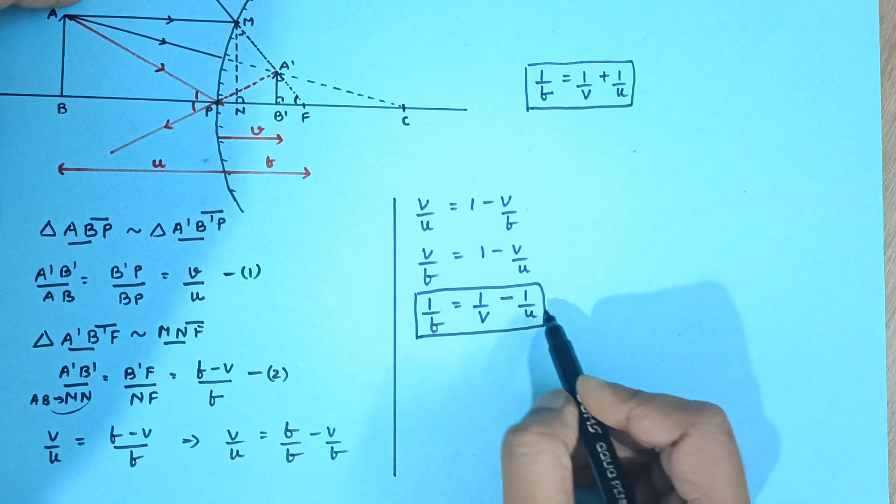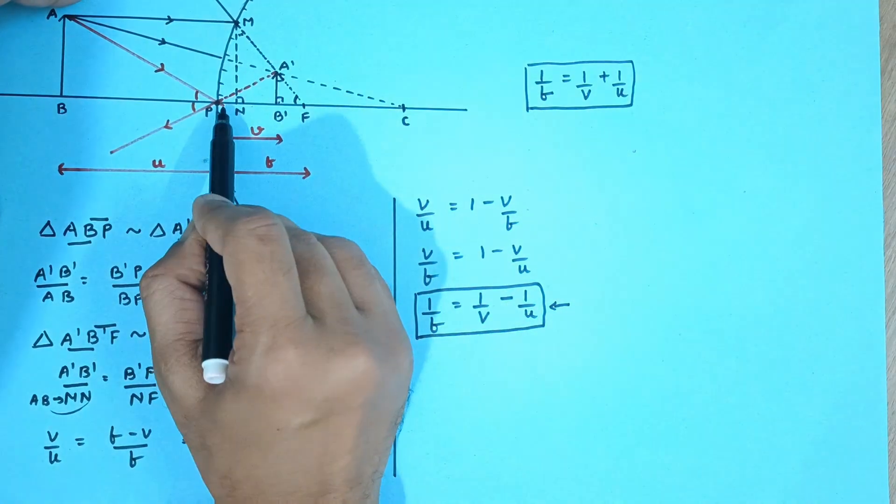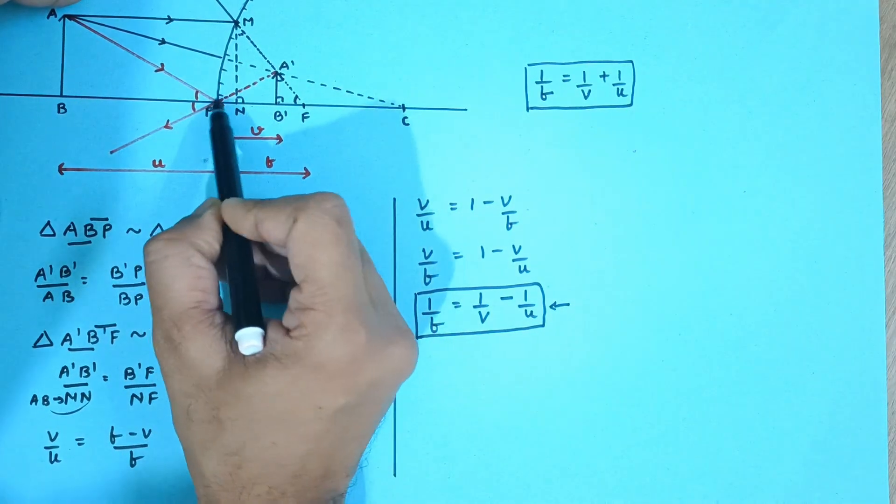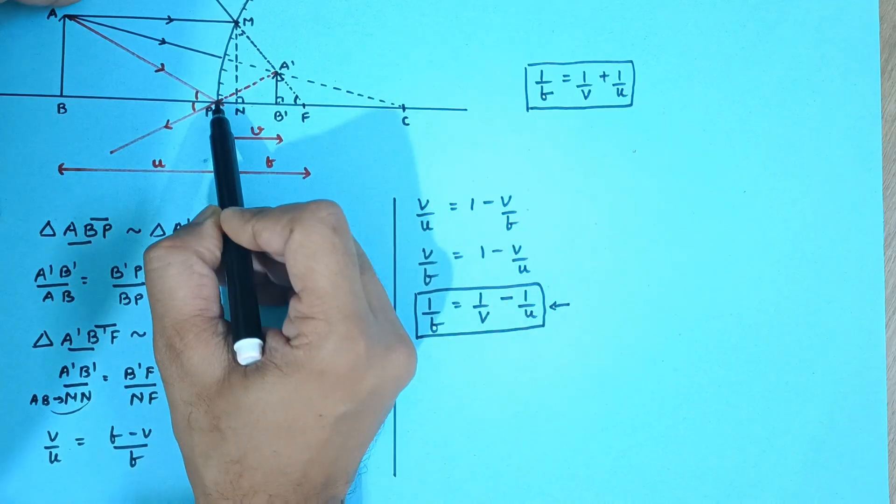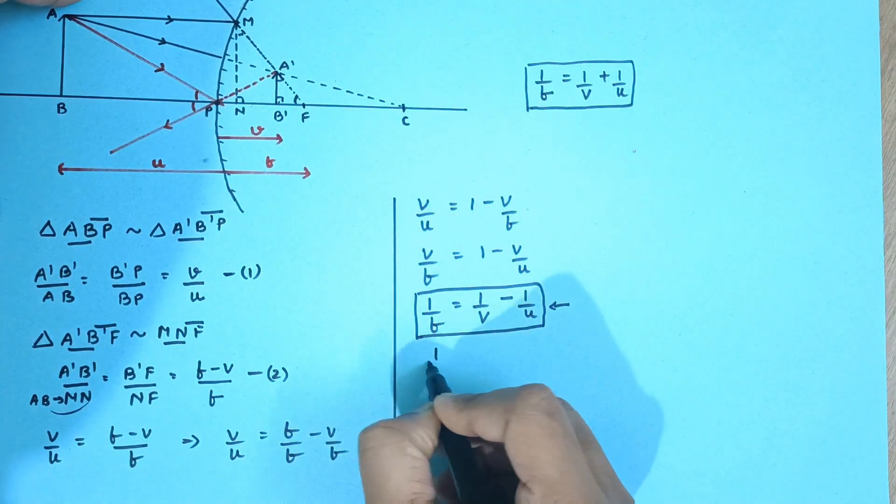So what we do is we apply sign convention once while derivation. All distances in the direction of incident ray would be positive or if I consider an origin here, then all distances this side will be plus so V and F will be plus.